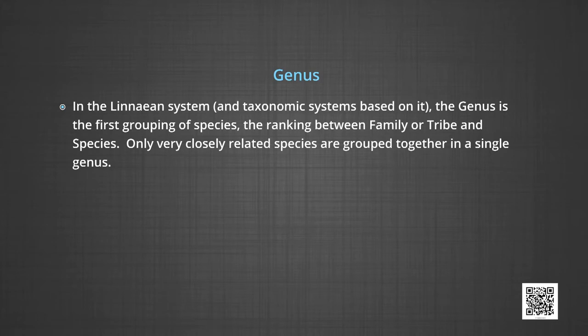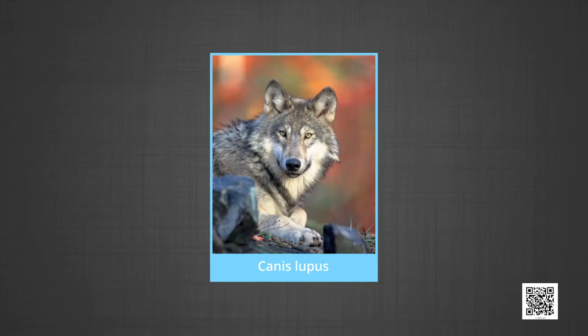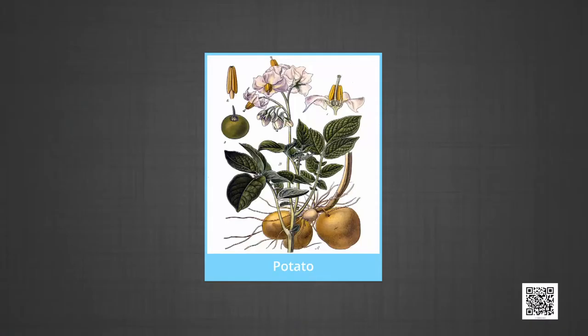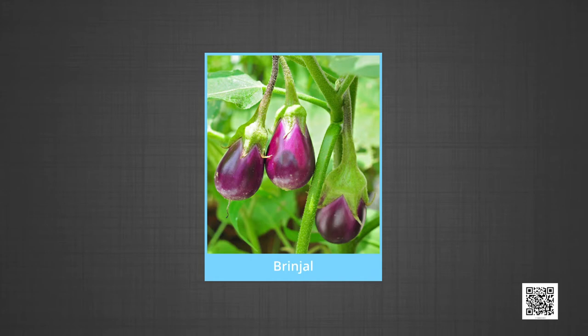In the Linnaean system, the genus is the first grouping of species — the ranking between family and species. Only very closely related species are grouped together in a single genus. The genus is sort of a surname, whereas the species is the first name. Canis lupus (the wolf) is distinguished from Canis familiaris (the domesticated dog); although very similar, they are still distinct species but belong to the same genus. Similarly, Homo erectus and Homo sapiens belong to the same genus. Genus comprises a group of related species which has more characters in common compared to species of other genera. For example, potato and brinjal are two different species but both belong to the genus Solanum. Lion (Panthera leo), leopard (Panthera pardus) and tiger (Panthera tigris) are all species of the genus Panthera, which differs from genus Felis, which includes the cats.